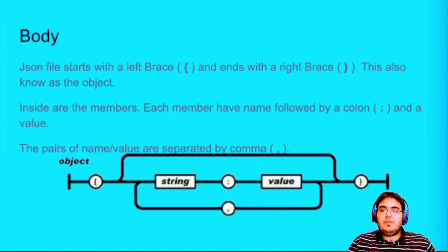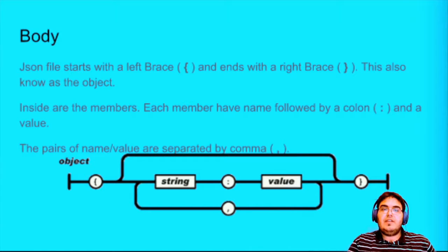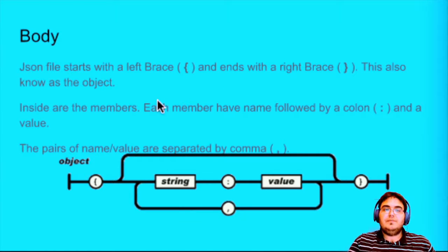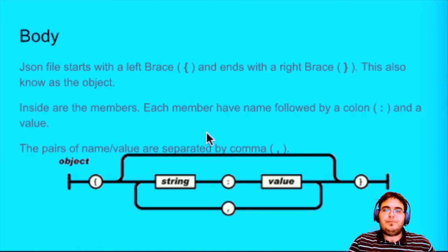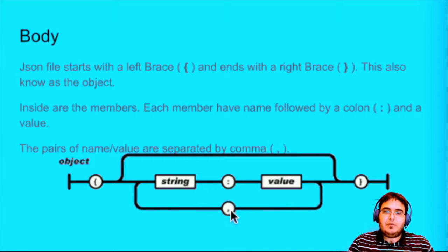The body of JSON starts with a left brace and ends with a right brace — they call that an object; that's why it's in the name 'Object Notation.' Inside, between those braces, they call it a member. Each member has a name, followed by a colon, followed by what we're storing — the value. If we have more than one member, we put a comma and then it repeats: name, colon, value — all the way to the last one, which doesn't have a comma and is followed by the closing brace.